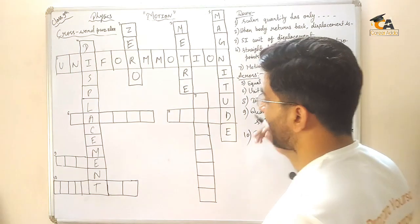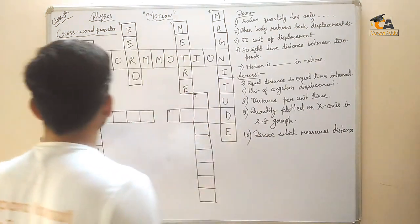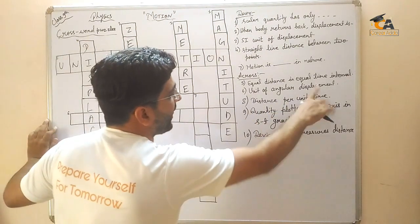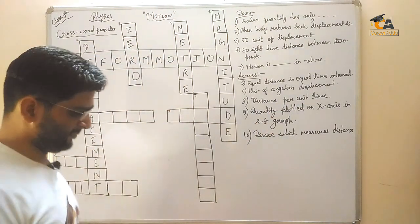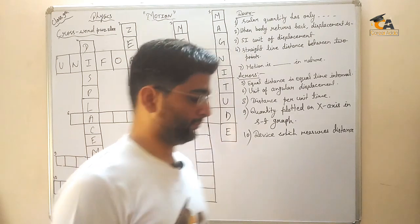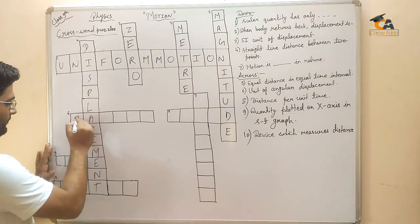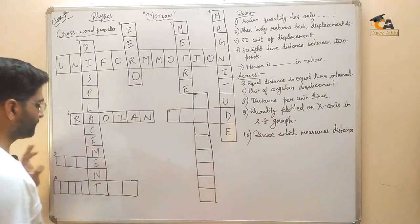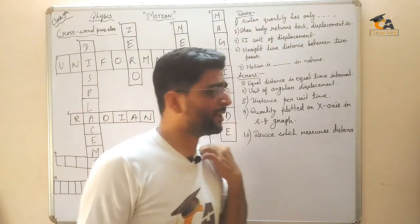Next, we are going to do across here. Unit of angular displacement. Angular displacement unit, what is it? Radian. Very good. R-A-D-I-A-N. Very good.